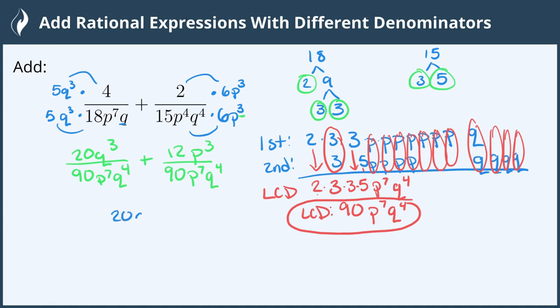So we get 20q to the 3rd plus 12 p to the 3rd and divide this by 90 p to the 7th q to the 4th. We've now added our rational expressions with different denominators by finding the common denominator and we're all done.